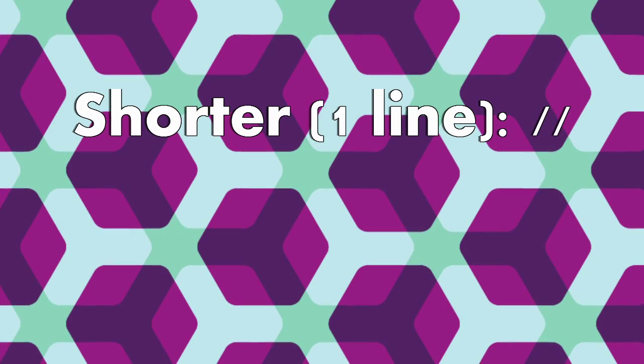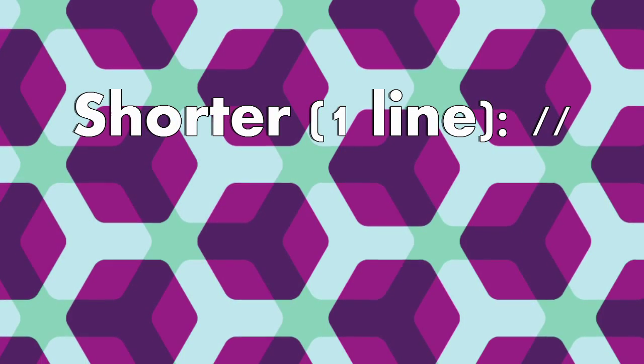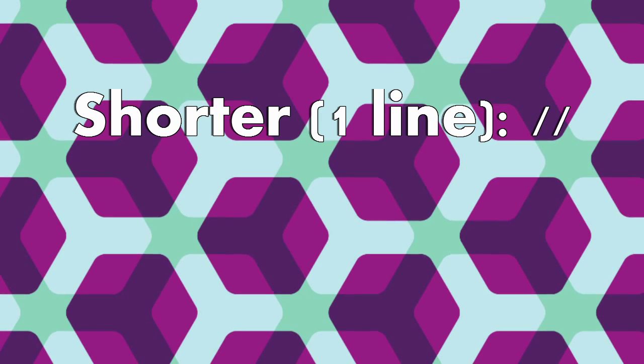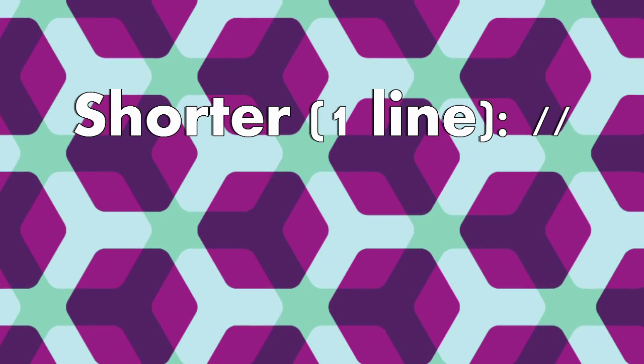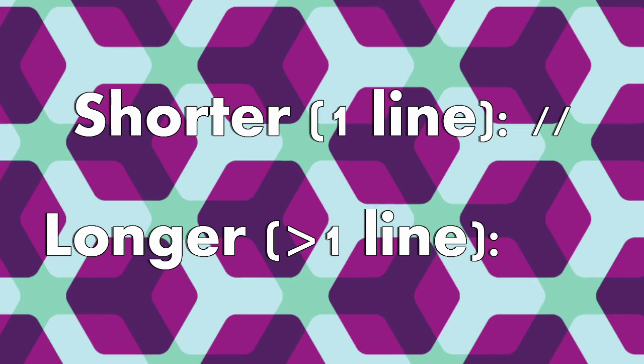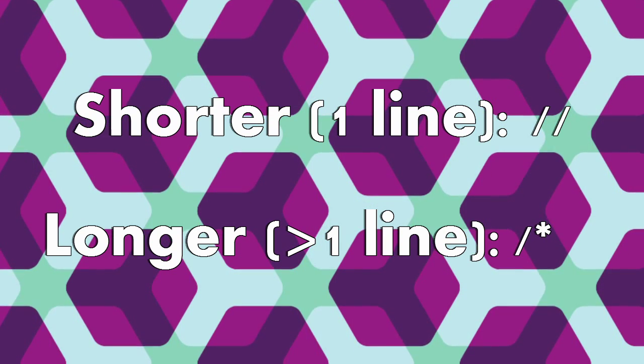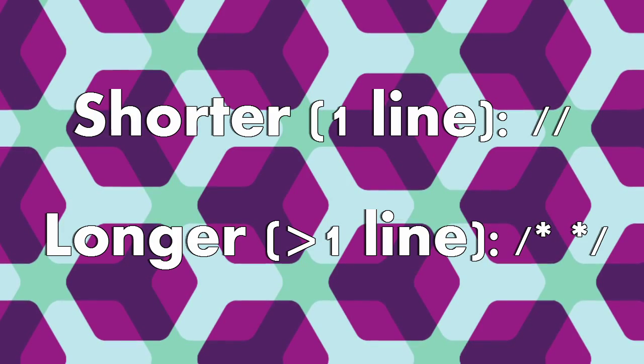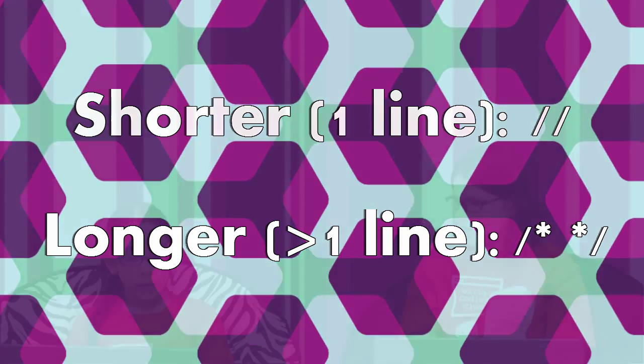So, how can you add comments to your code? If the comment is shorter, no longer than one line, you can add it by typing two forward slashes before it. If it's longer than one line, you can start it by typing slash, star, and you can end it by typing star, slash. Whichever type you use, it's easiest to add comments while you're coding instead of afterwards, especially if your project is big.